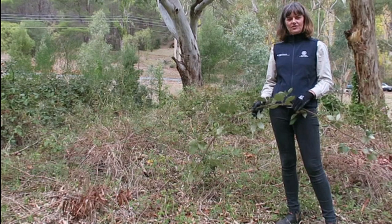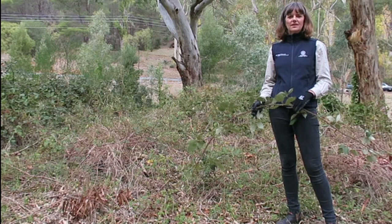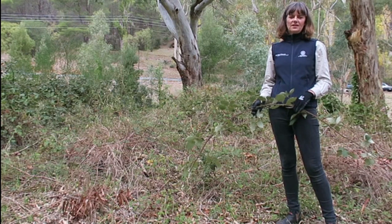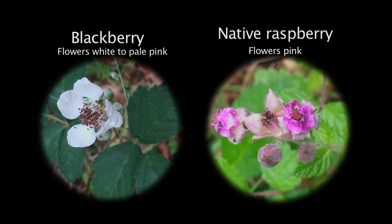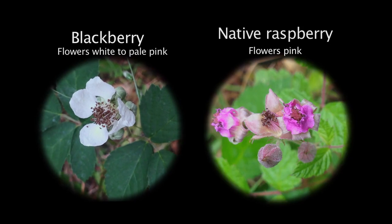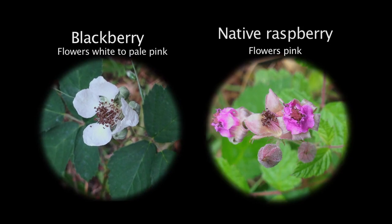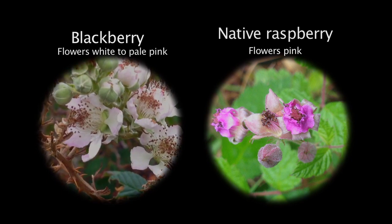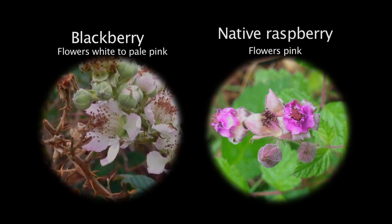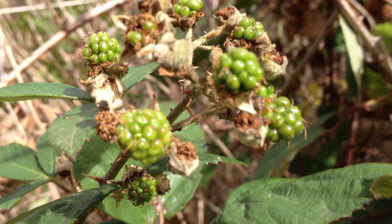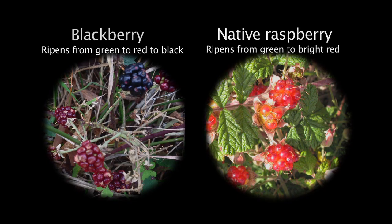The main identifying features between blackberry and native raspberry are the flowers. The flowers for native raspberry are generally pink, whereas the flowers for blackberry are white to pink. Also, there's quite a difference with the fruits — the fruits for native raspberry are red, whereas the blackberry are black.